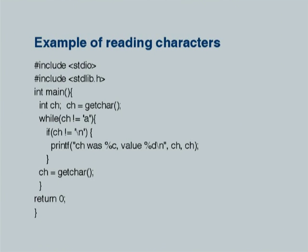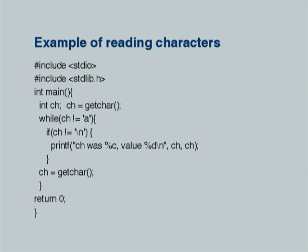To illustrate the use of getchar, here is an example. This example declares ch as int, then allocates to ch a character read from the input stream by the getchar function. Here is an interesting thing we should tell our students early on. Ordinarily we would have declared ch as char, but we have declared it as int. With getchar, the value you get is always allocated to an integer variable — that is why ch is int.